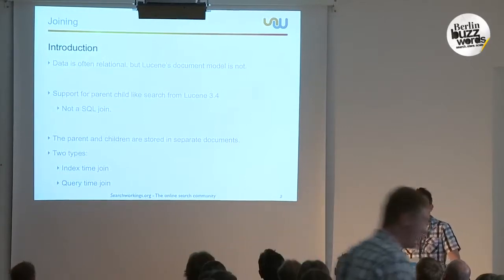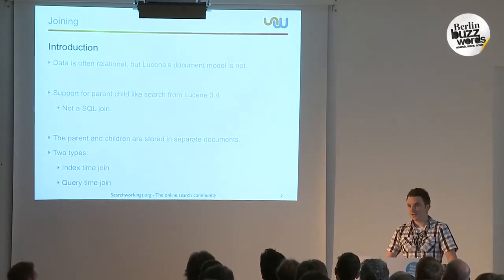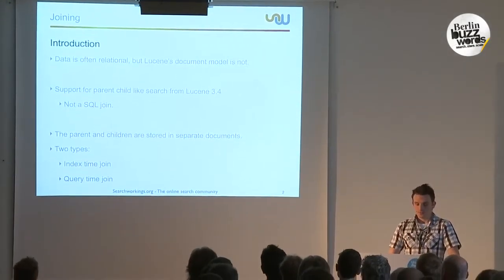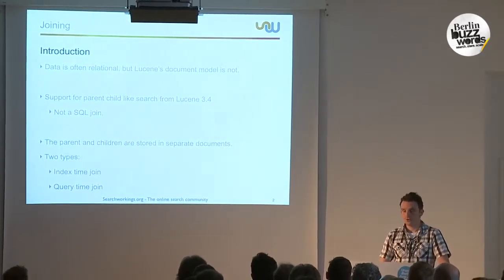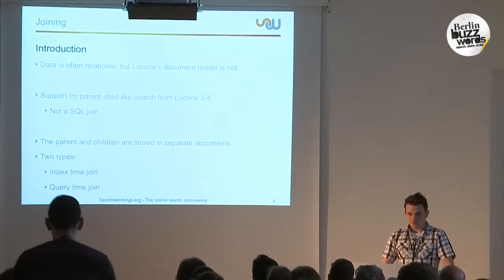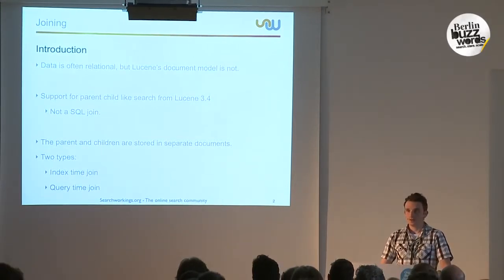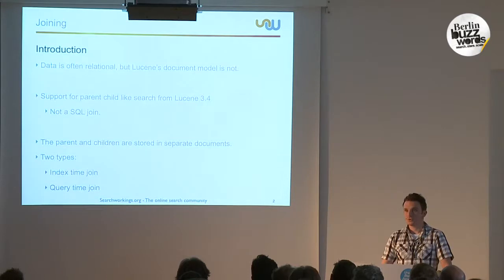Joining can be a bit of a misleading name, because when people think about joining, they think about relational databases and SQL joins. That is something not implemented in Lucene — in Lucene it's more a parent-child-like join. There are two types: an index-time join, where the relation is defined at index-time, and a query-time join, where the relation is defined at query-time.